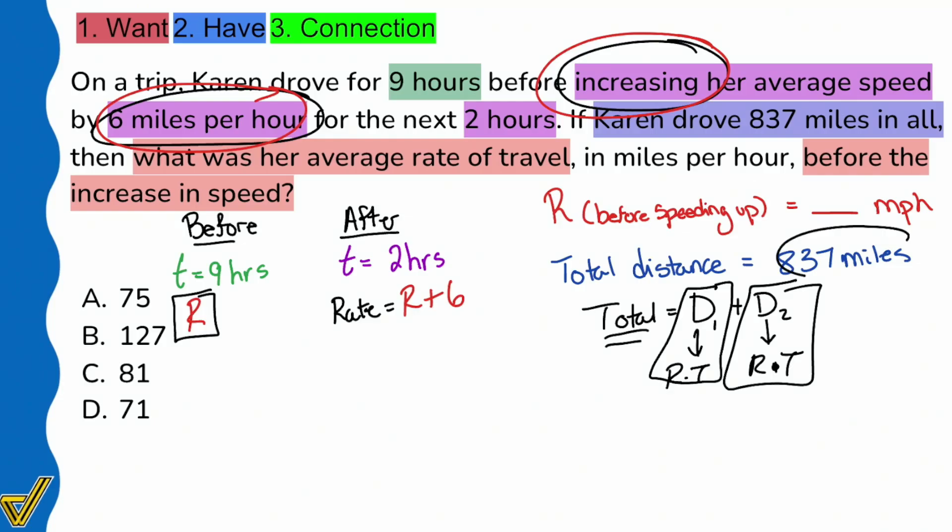Let's find the rate times time for the first distance, rate times time for the second distance, set it equal to the total and we're done. Our total distance, 837 miles, equals the first distance - before the speed increase the rate times time will just be the R we're looking for times nine hours, so we have 9R. Then we're going to be adding what happens in the second part.